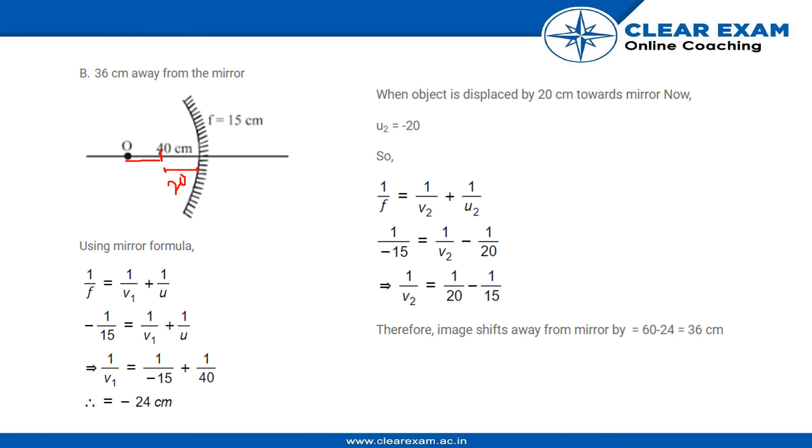Now we'll apply the formula again, the mirror formula. We know the value of 1 by f is 1 by minus 15, negative because it is a concave mirror, equal to 1 by v2 minus 1 by 20. u2, the new value of u2. Similarly, we'll find the value of v2 which would come out to be 36 centimeters.